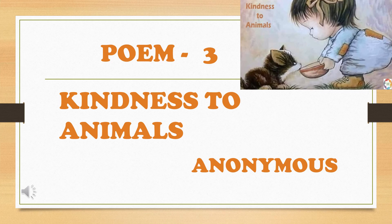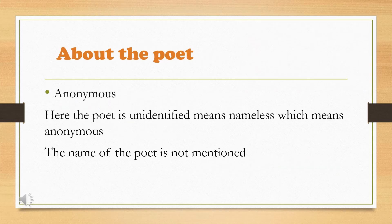The poet mentioned here is anonymous. Anonymous means the poet is unidentified — nameless. Anonymous means the names are not represented; the poet doesn't want to make a mark of his name. Such poets who are not expressing their names, we call them anonymous.